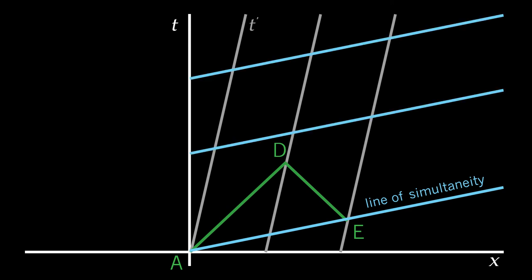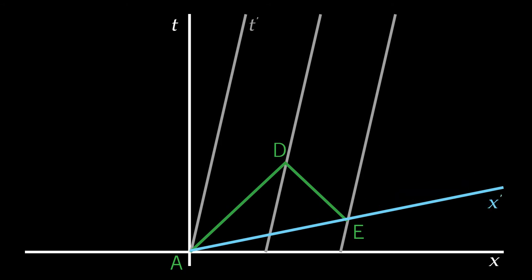And indeed we could draw all of the lines of simultaneity parallel to that line of simultaneity. That line of simultaneity that goes from A through E, we call the x prime axis.